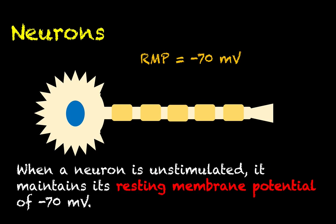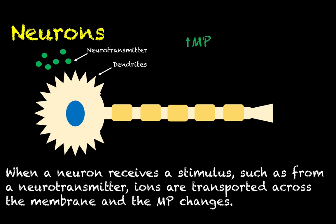We'll cover the basics of membrane potential quantification in future videos. For now, consider that a neuron in an unstimulated state maintains a resting membrane potential of negative 70 millivolts. There will be a time this semester where it's important to remember that number, but don't worry about it just yet. When the neuron is at rest with this resting membrane potential of negative 70 millivolts, that means the inside of the cell is that much more negative than the outside. At this resting state, the neuron is not doing anything — not firing action potentials, not communicating with anybody.